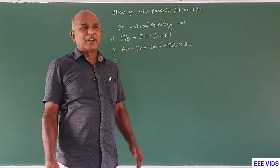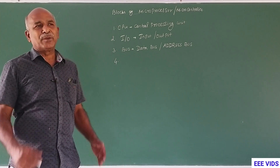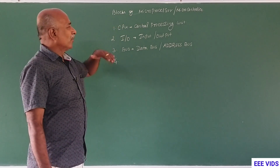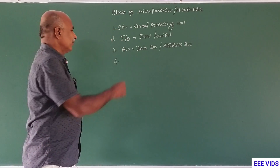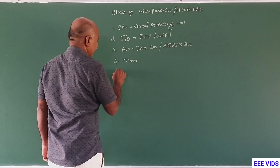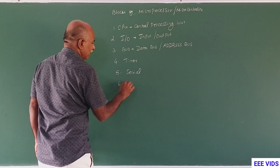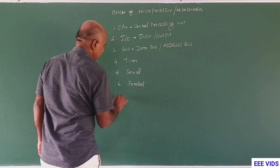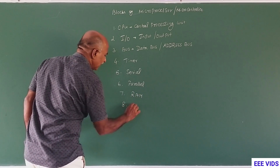What are the parts of the microcontrollers? The blocks are: CPU — central processing unit — IO (input/output), bus, data bus, address bus, then timer circuits, serial port, parallel port, RAM, and ROM. So these are the parts.